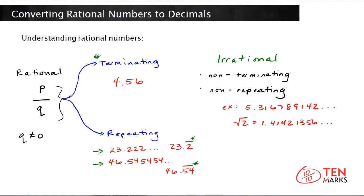Another type of example is the square root of a non-perfect square. Since 2 is not a perfect square, when you take the square root of this number you get a non-repeating, non-terminating decimal of 1.4142135..., and this could go on forever.